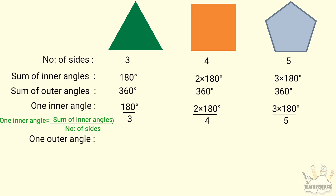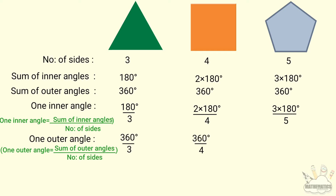For one outer angle, the measure equals the sum of outer angles divided by the number of sides. For the triangle: 360/3. For the square: 360/4. For the pentagon: 360/5. So the sequence is: x1 = 360/3, x2 = 360/4, x3 = 360/5.